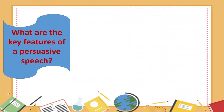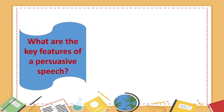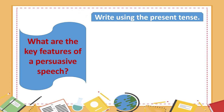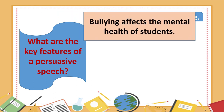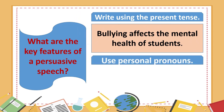What are the key features of a persuasive speech? Number 1: Write using the present tense. For example, bullying affects the mental health of students.